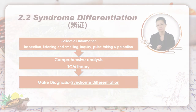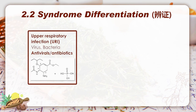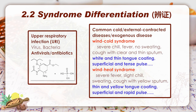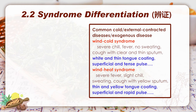Let's take upper respiratory infection as an example. In Western medicine, it may be caused by either a virus or bacteria. After blood detection, the doctor determines whether the patient is affected by a virus or bacteria, and treats accordingly with antivirals or antibiotics. In TCM, upper respiratory infection is named as common cold or externally contracted disease, which can be further differentiated into wind-cold and wind-heat as the most common syndromes, based on comprehensive analysis of information such as cause and manifestation.